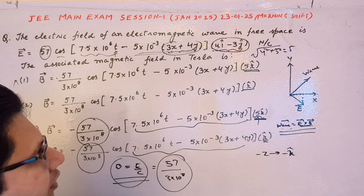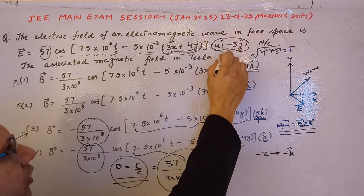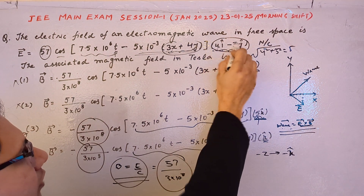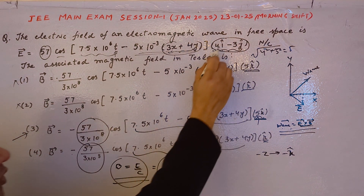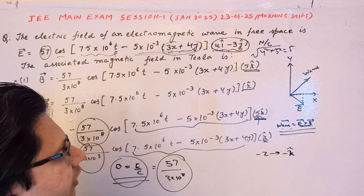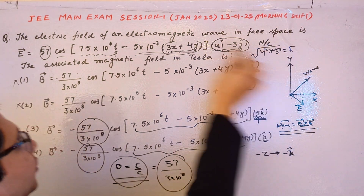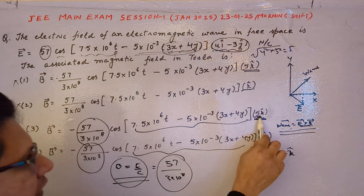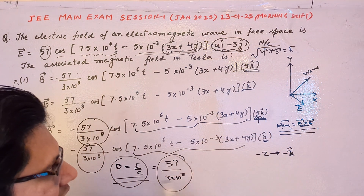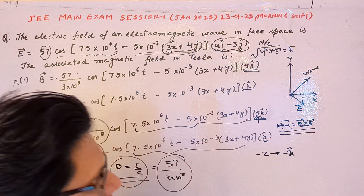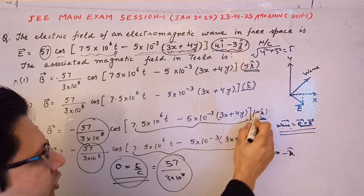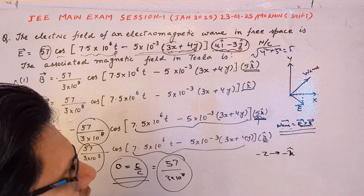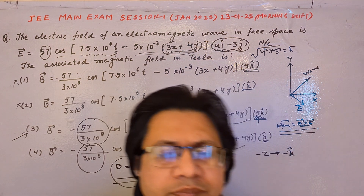The magnitude should be multiplied by 57, so the factor of 5 must be included. Option three correctly includes this factor of 5, so option three is the correct option. Hope you understand the explanation, thank you.